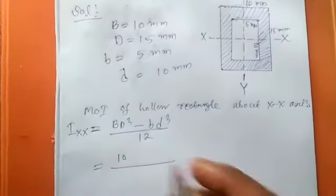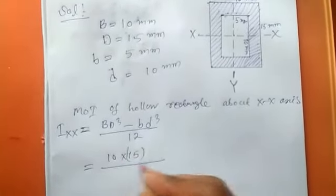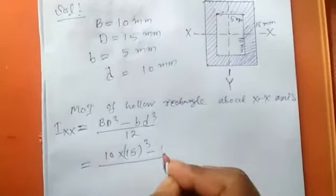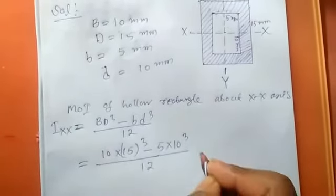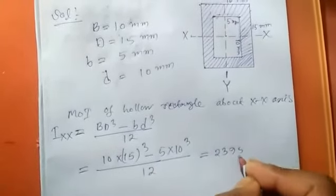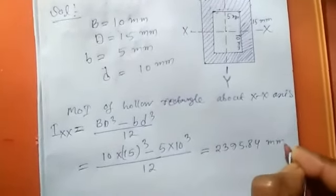10 into 15 cube minus 5 into 10 cube divided by 12. This will be 2395.84 mm to the power 4. This is our first answer.